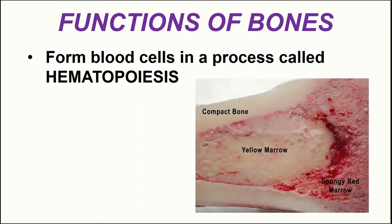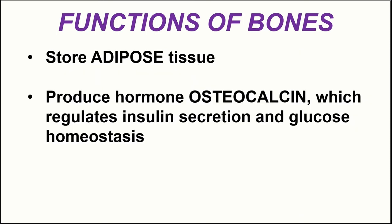Bones also function to form blood cells in a process called hematopoiesis, which occurs in a special tissue called red bone marrow. We also have yellow bone marrow, but yellow bone marrow is primarily an adipose tissue — a storage site. This brings us to another function of bones: storing adipose tissue in certain cavities within the bones.